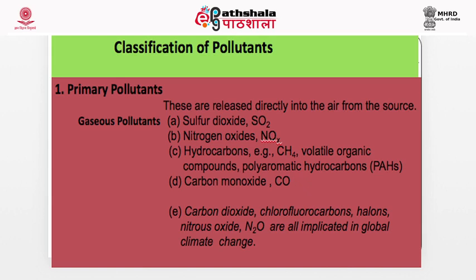How are pollutants classified? There are several kinds of classifications. First, primary pollutants: those substances directly released into the air from the source. For example, when we burn coal, which inherently contains sulfur, combustion oxidizes the sulfur and sulfur dioxide is directly released into the atmosphere — so it is a primary pollutant. Carbon dioxide, chlorofluorocarbons, halons, nitrous oxide, and N₂O — implicated in global warming — are all gaseous primary pollutants.